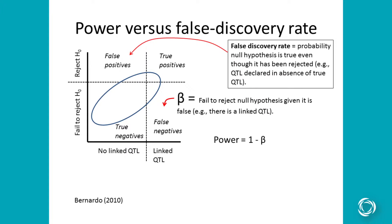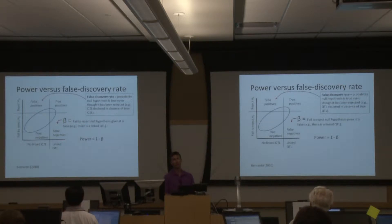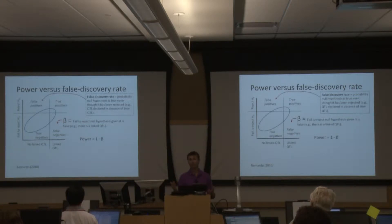When I talk about power and false discovery rate: your false discovery rate is the number of times you reject the null hypothesis when in fact the null hypothesis was true — so how many times you're wrong. Your power, on the other hand, is the proportion of times you reject the null hypothesis when the null hypothesis is actually false — so if there is a QTL present, what's the probability you correctly detect it? There's a trade-off: the lower you set your statistical threshold, the more power you have, but you'll also have a higher false discovery rate. You want to maximize power while minimizing false discovery rate.